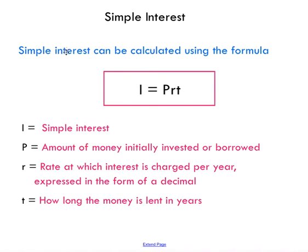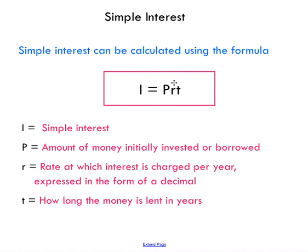Simple interest can be calculated using this formula, where I is the interest that you earn, P is the principal amount of money initially invested or borrowed, R is the rate at which interest is charged per year — usually given as a percentage that we convert to a decimal — and T is how long the money is lent or borrowed in years. The amount of interest you earn is equal to how much you invest times the rate times the time.